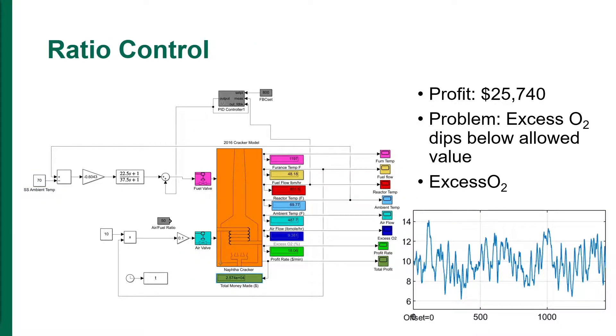In order to control the excess O2 at the set point, a ratio controller between the fuel flow and the air flow was implemented. The ratio of the air flow to the fuel flow is 10. The resulting profit was $25,740.